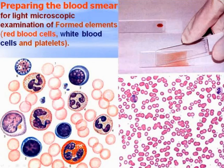Under the microscope you can see formed elements: red blood cells — they are the most numerous — and white blood cells, leukocytes.